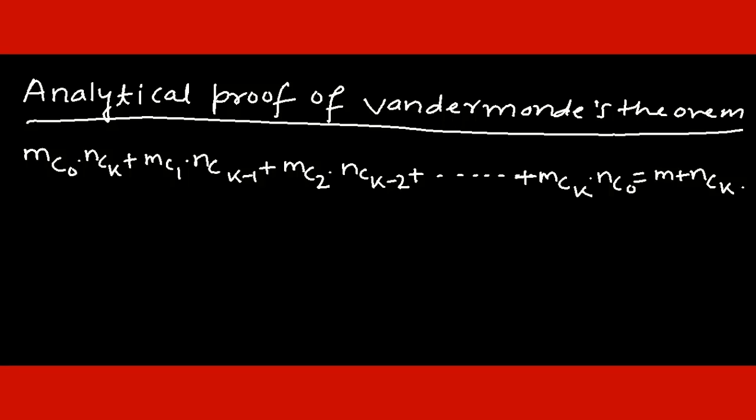Today we will see the analytical proof of Vandermonde's theorem. The theorem states: mC0 into nCk plus mC1 into nCk-1 plus mC2 into nCk-2, and so on up to mCk into nC0, is equal to m+nCk. We can prove this theorem using the binomial theorem, and we can also prove it analytically.